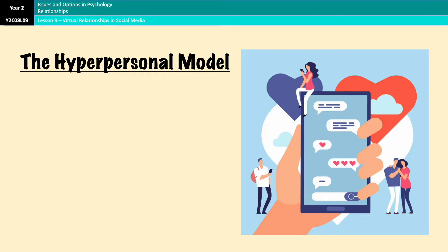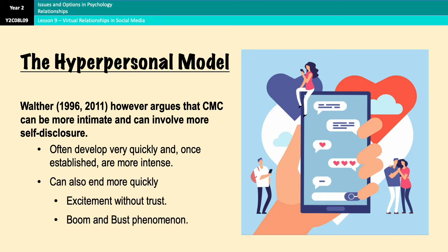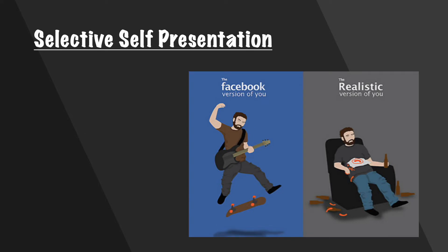However, the hyper-personal model argues that virtual relationships can in fact be more effective than face-to-face relationships. Research has shown that virtual relationships often develop very quickly because self-disclosure happens much earlier, and once the relationship is established, the self-disclosure is often far more intense and intimate. There are two suggested reasons for this. Firstly, the sender of a message has far more control over what they want to disclose and the cues they choose to present when sending the message.